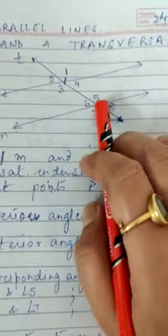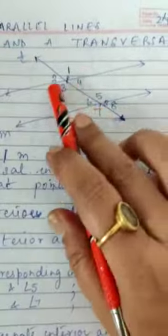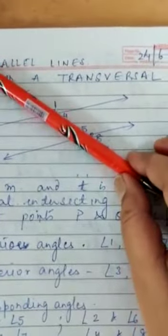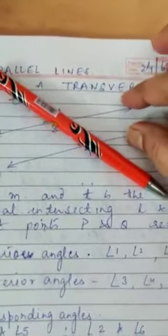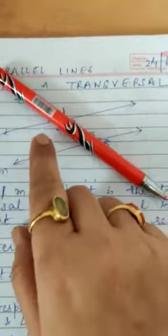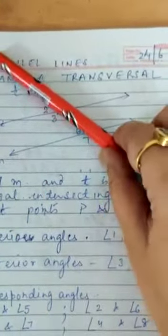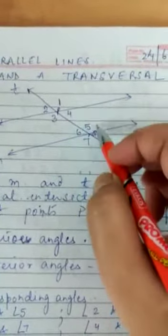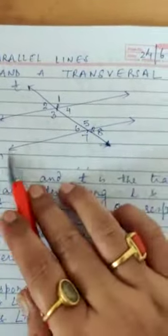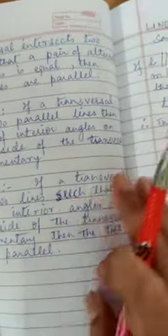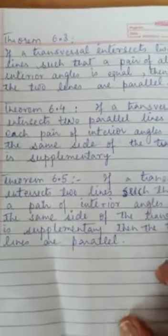Also, for angles on the same side of the transversal — that is, interior angles — if the lines are parallel, then angle 4 plus angle 5 equals 180°, and similarly angle 3 plus angle 6 equals 180°. And if you are given that angle 3 plus angle 6 equals 180° or angle 4 plus angle 5 equals 180°, then you can conclude that the two lines are parallel. I hope these concepts are clear. This was just a revision of what you have studied previously.